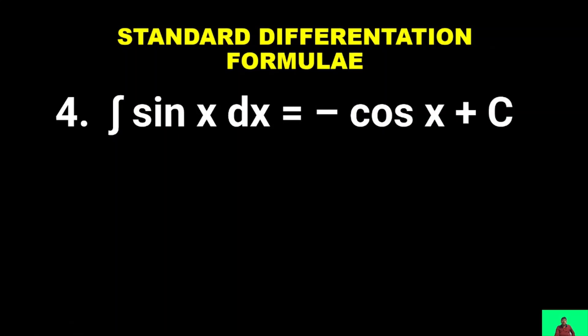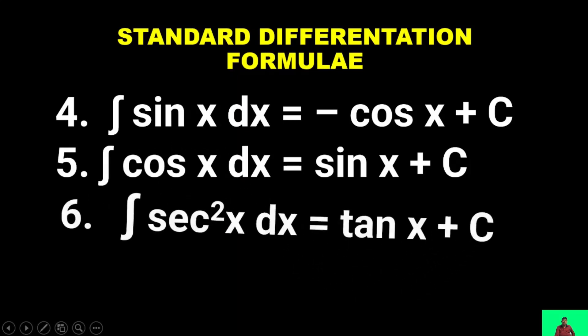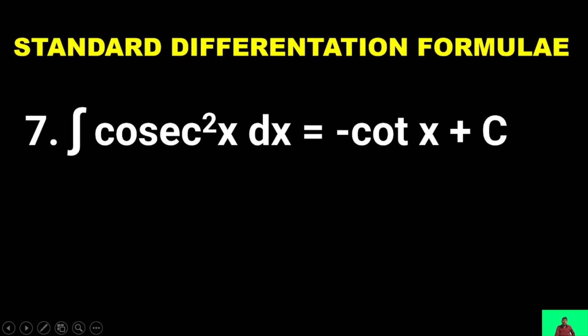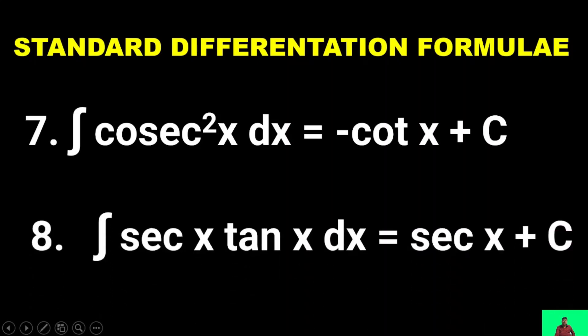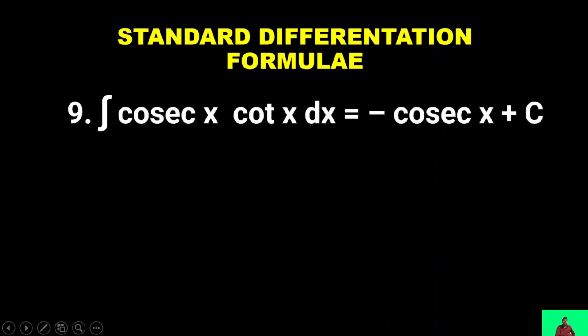∫sin x dx = −cos x + C. ∫cos x dx = sin x + C. ∫sec²x dx = tan x + C. ∫cosec²x dx = −cot x + C. ∫sec x · tan x dx = sec x + C. ∫cosec x · cot x dx = −cosec x + C.